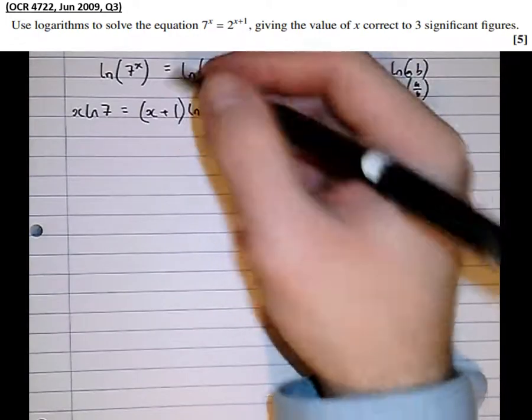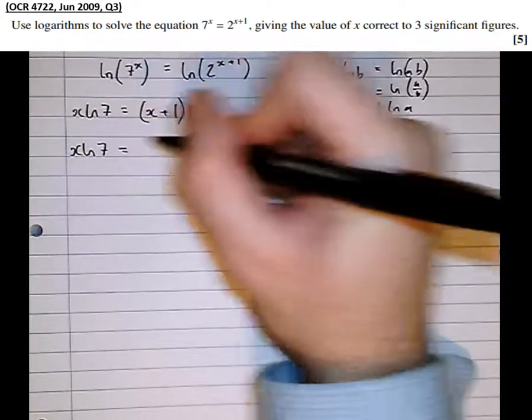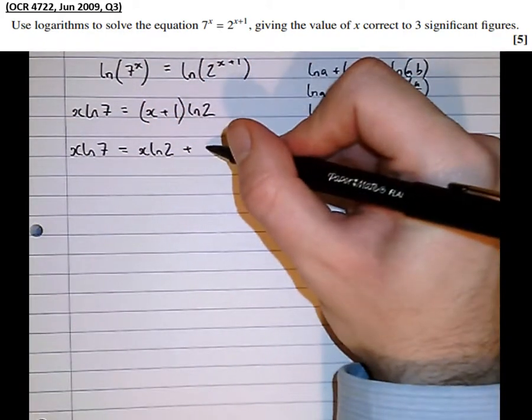Right, next thing I'm going to do, multiply out the brackets. So I've got x log 7 equals x log 2 plus 1 times log 2, which is log 2.